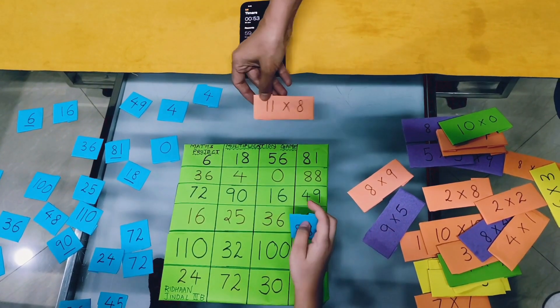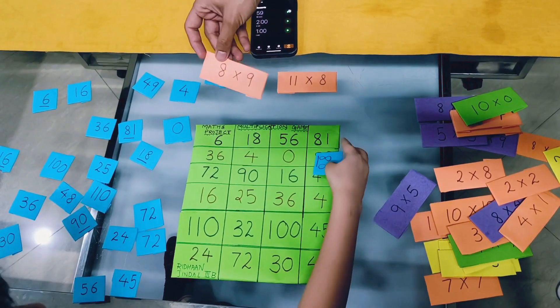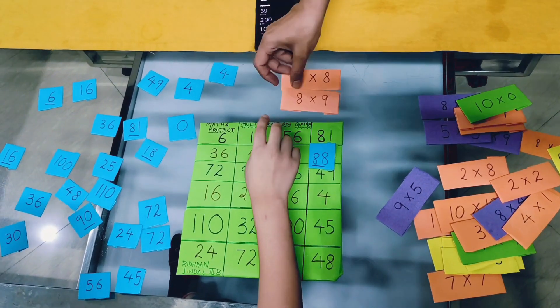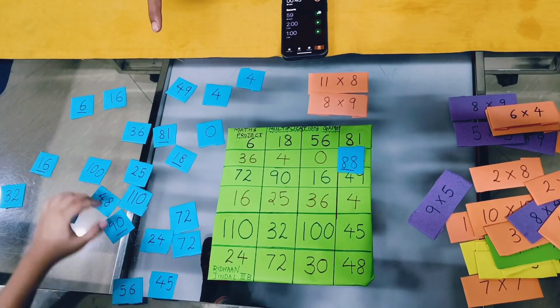This is 11 into 8. 11 into 8 equals to 88. 8 9's are 72. So, we will put 72.